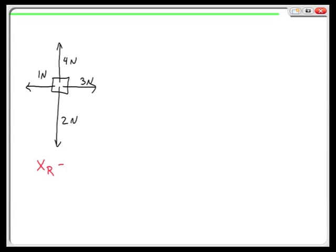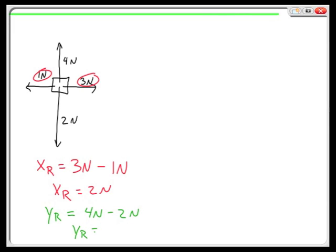That's going to be an x_r equal to 2 Newtons. In the y direction, I have that component for the resultant is equal to a positive 4 Newtons minus 2 Newtons, which of course gives me a y_r equal to positive 2 Newtons.